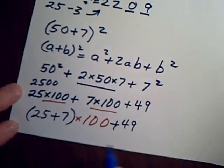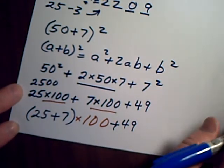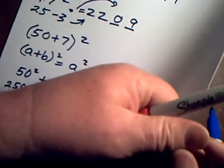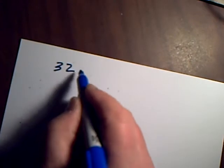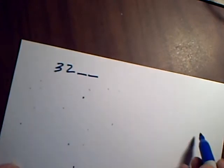Okay, well what's 25 plus 7? That ends up giving me 32, and 100 just puts two spaces there, that's where my 100 is.